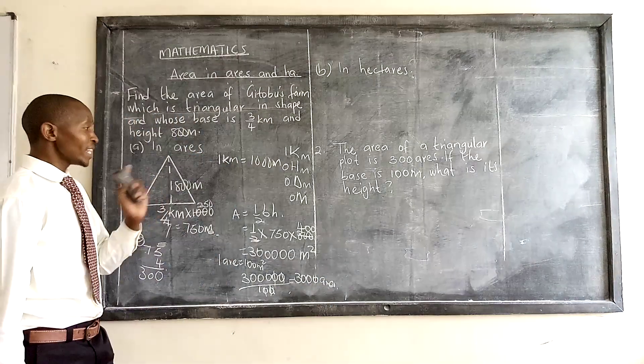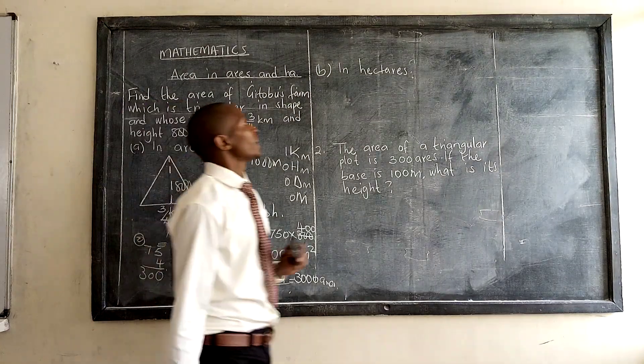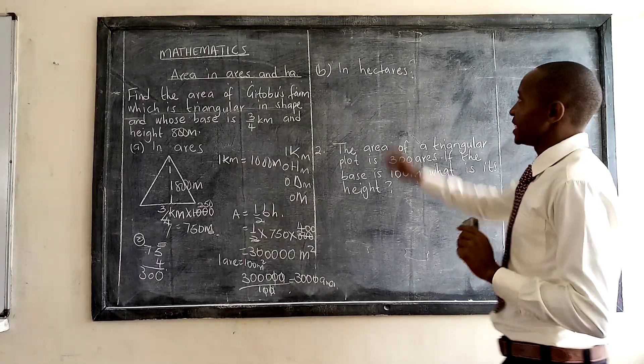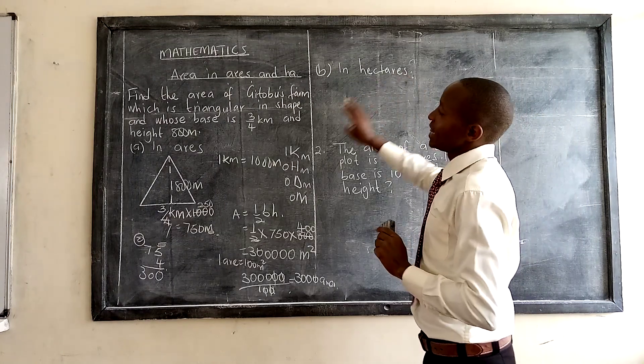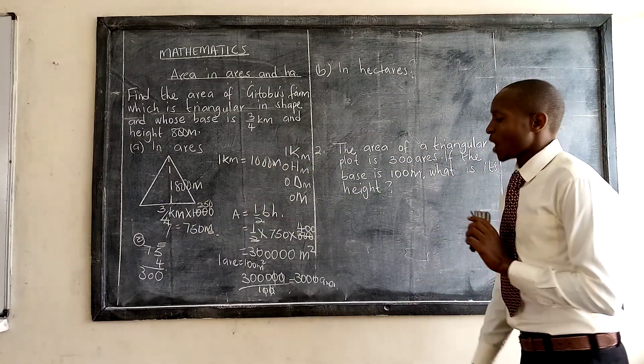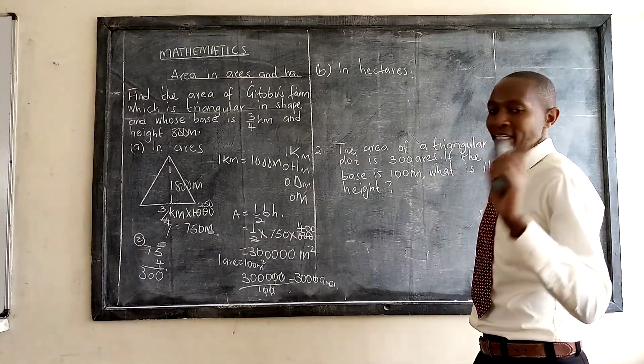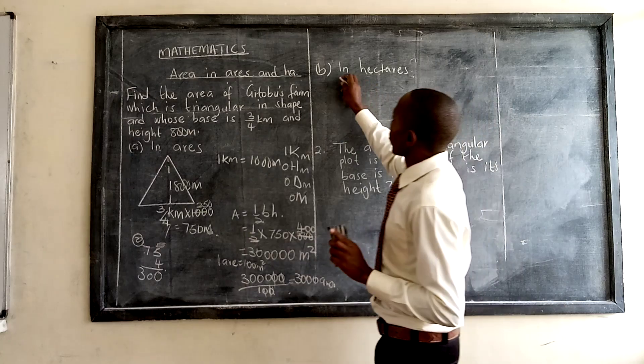So we get that is 3,000 airs. That is our example one. Example two: find the area of this triangle in hectares. We have two ways.